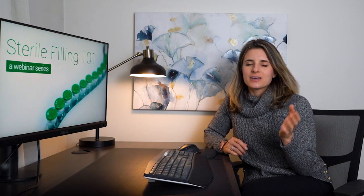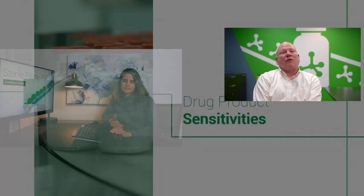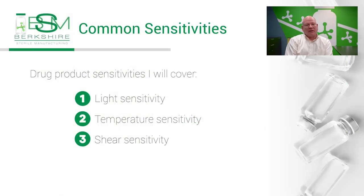I will cover the three common drug sensitivities — light sensitivity, temperature sensitivity, and shear sensitivity — and how we deal with them at BSM to protect the product. Let's start with light sensitivity products. Typically, these products are damaged when they're exposed to higher energy wavelengths of light, such as those in the blue, purple, and ultraviolet range. Other products may absorb other wavelengths. For example, we once filled a product that absorbed both red and blue light and was only protected under green light.